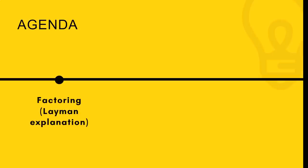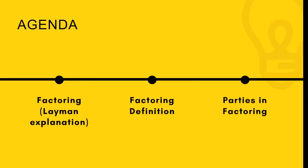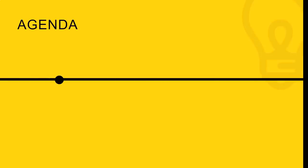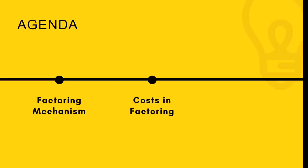Now friends, let's see what you will learn in this lecture. I will start off with explaining the concept of factoring in layman language so that you will understand the complex term of factoring. Then I will explain the formal definition of factoring along with some other important points. Next you will learn about various parties in the factoring process. Then you will learn factoring mechanism practically, covering various steps in the process. Then we will learn about types of factoring — the 4 most important types which are commonly asked in the examination.